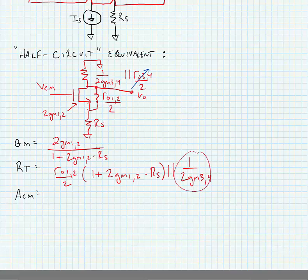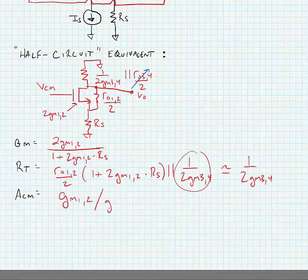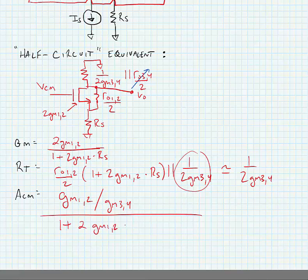This term should dominate so we can say that our total resistance is approximately 1 over 2GM34. Writing this together, we find that our common mode voltage gain is GM12 over GM34, all over 1 plus 2GM12 times RS.